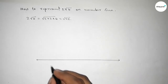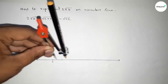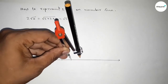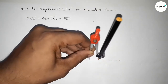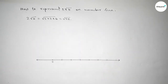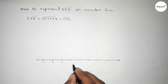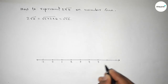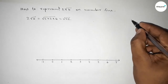First, draw a number line with arrow marks on both sides and mark zero as the starting point. Using a compass, take any length and mark the numbers on the line. Mark positions: minus one, one, two, three, four, five, six, seven.